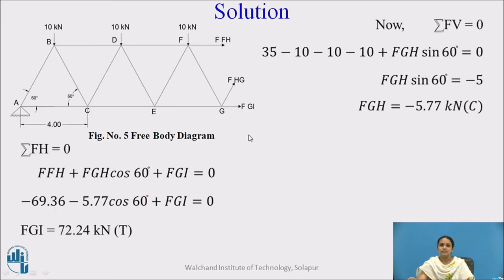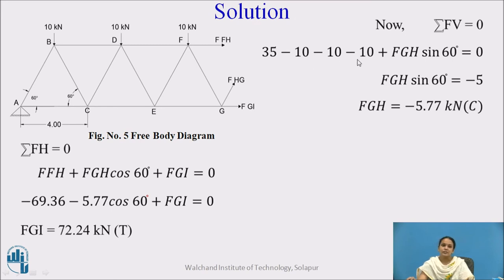By considering the equilibrium of the section, applying summation of vertical forces equal to zero and summation of horizontal forces equal to zero, we calculate the force in member GH. The vertical forces are the upward reaction at A (positive) and the three downward external loads of 10 kN each (negative). Likewise, you find the force in member GH and the force in member GI. Instead of using method of joint for large trusses, the method of section finds forces in few members directly.